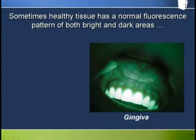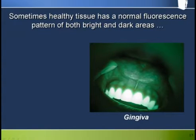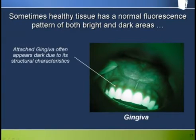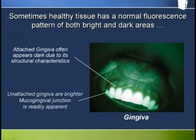Some oral mucosa appear homogeneously dark under Velscope due to their structural characteristics. A good example is the attached gingiva, which while having a typically light pink appearance in white light appears dark under Velscope. The unattached gingiva immediately adjacent to the attached gingiva have a brighter appearance, more typical of other mucosal tissues. This makes the mucogingival junction readily apparent under Velscope.